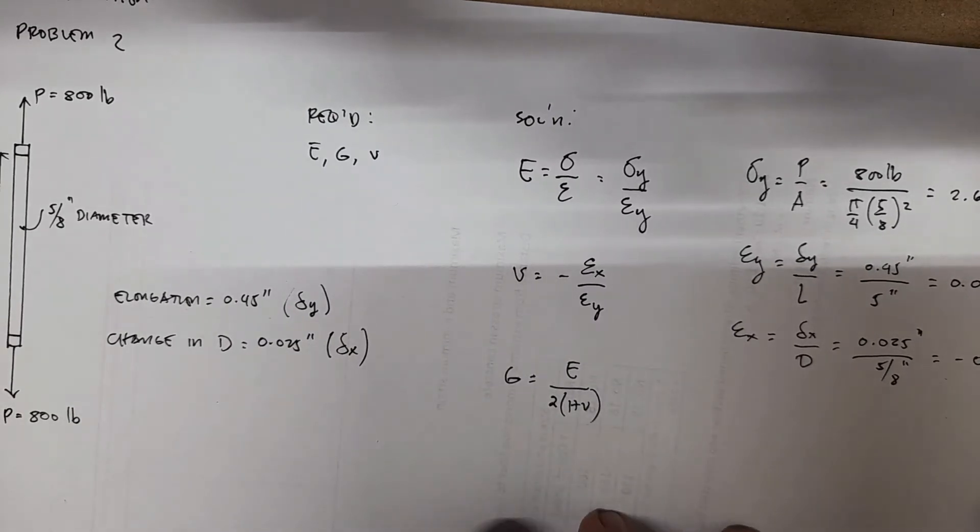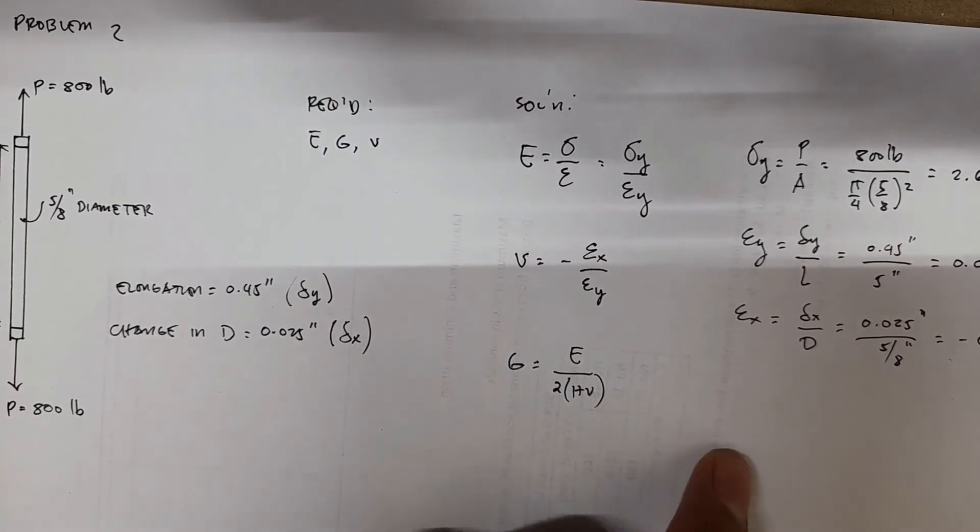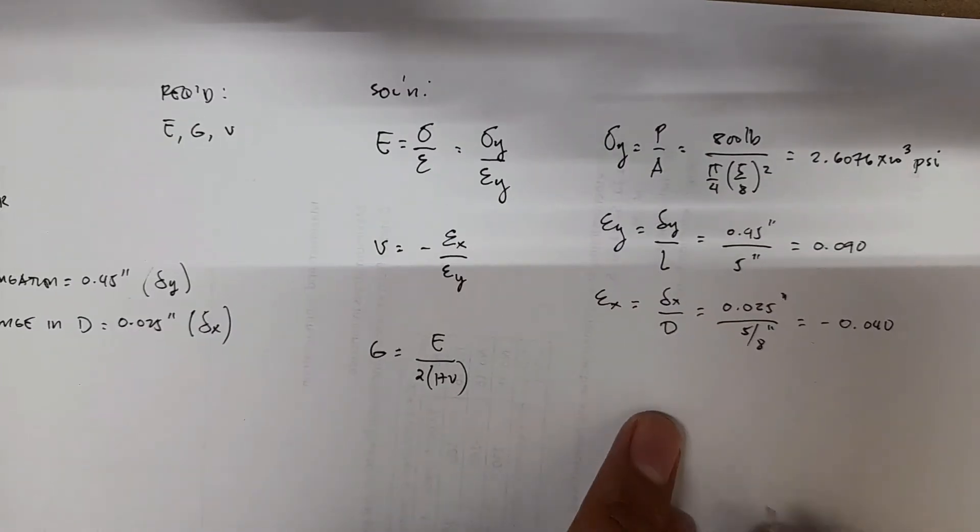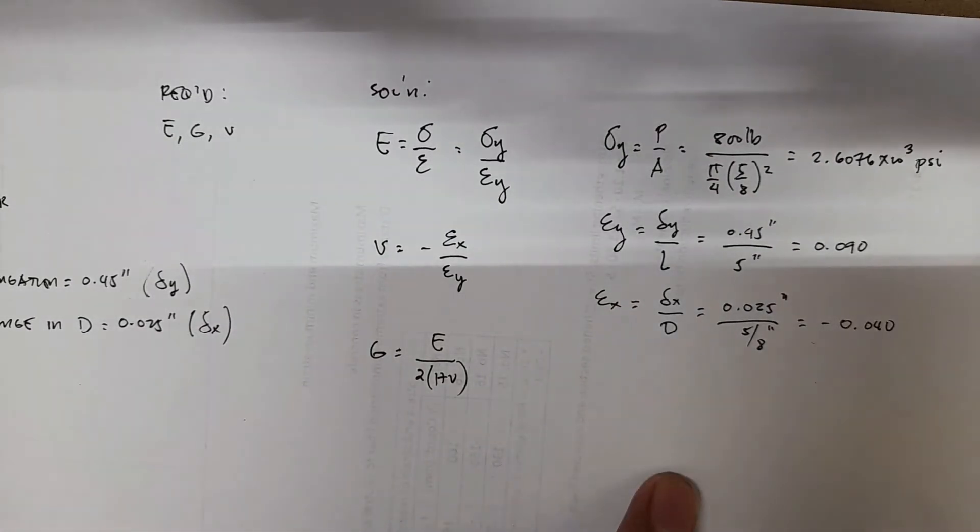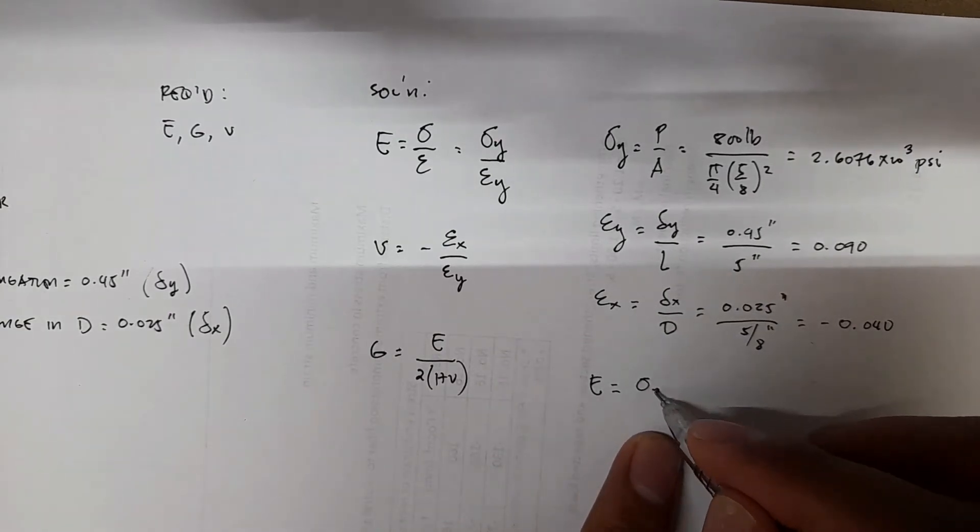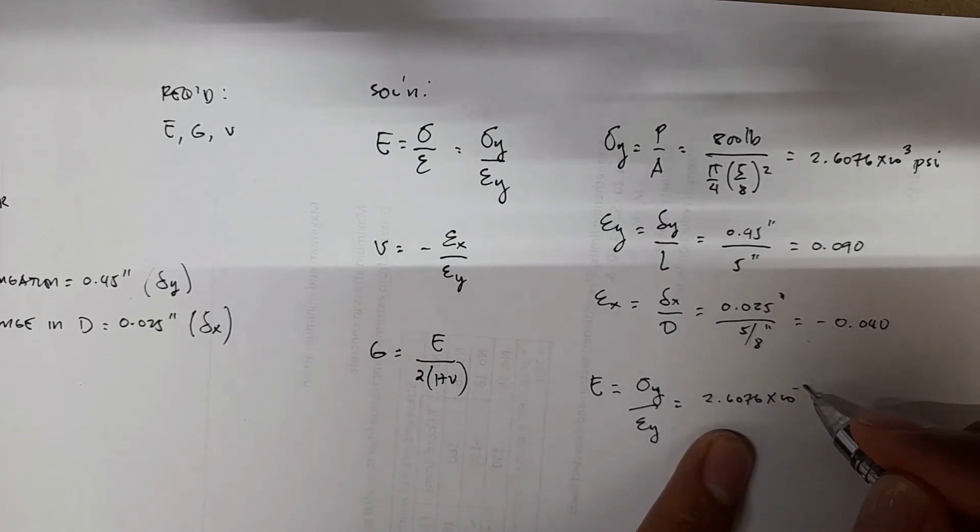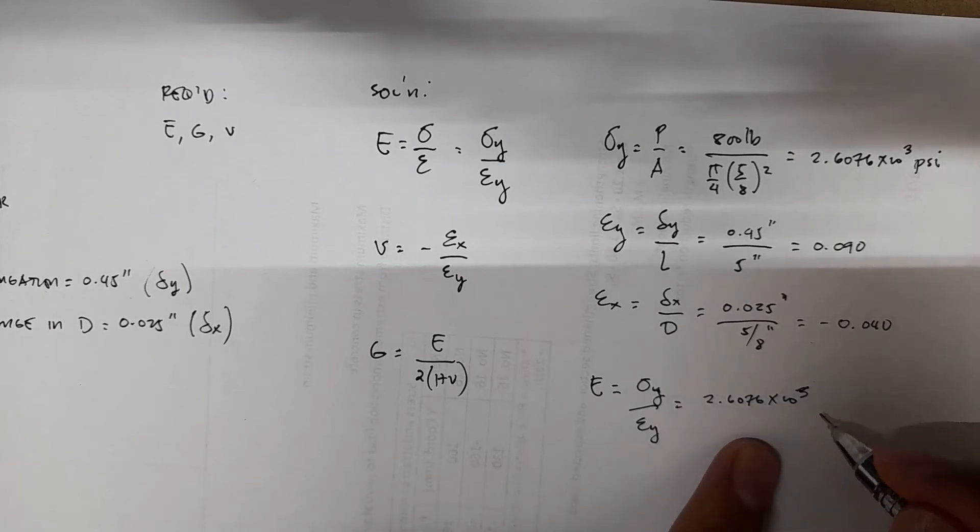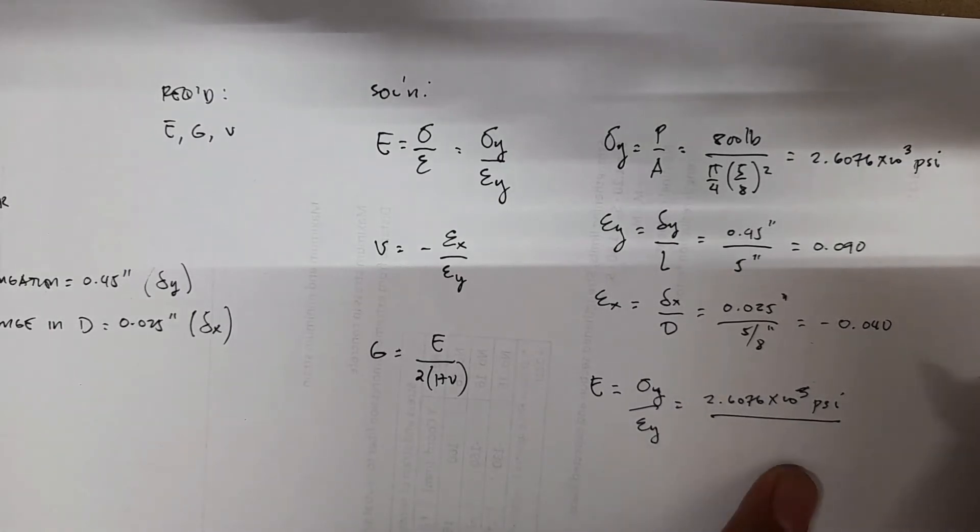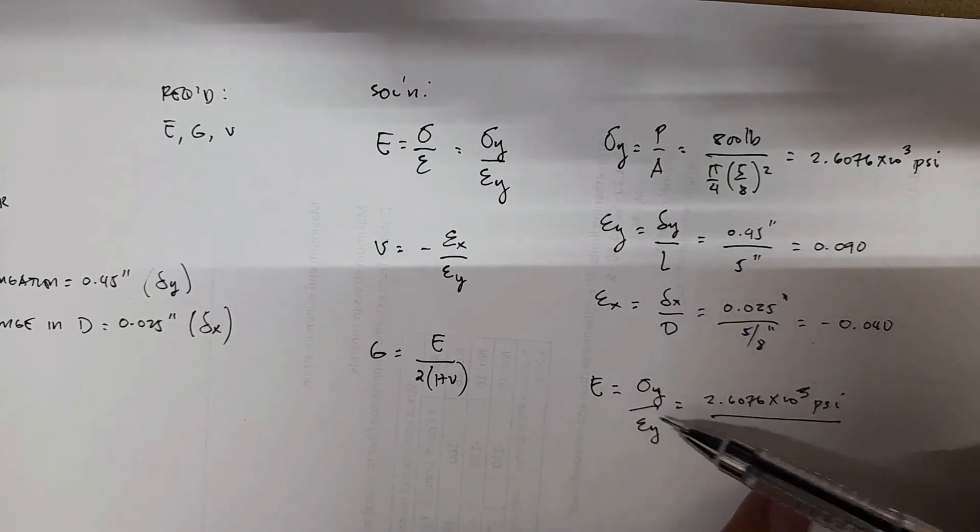We can solve for E. Knowing we now have strain y and stress y, E equals stress y over strain y, which is 2.6076 times 10 to the 3 psi divided by your strain y, which is dimensionless at 0.090.